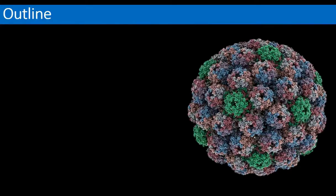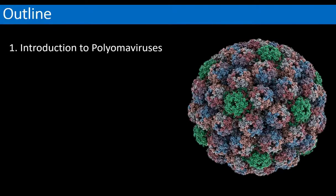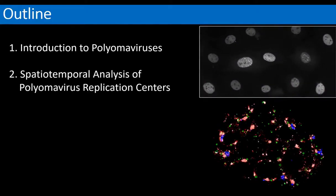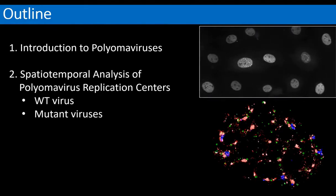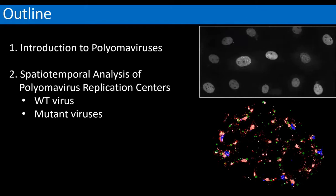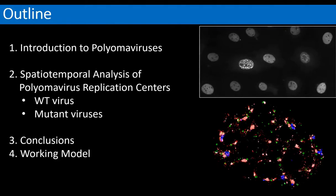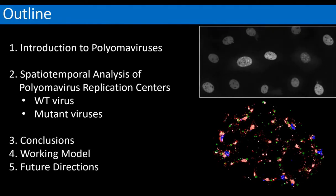I'll start with an outline to help orient us as we work through the talk. First will be an introduction to polyomaviruses. Then I'll discuss my spatiotemporal analysis of polyomavirus replication centers in both wild-type and mutant infections. Then I'll walk through general conclusions, my working model, and some future directions.